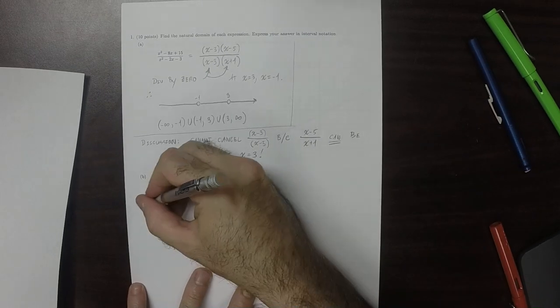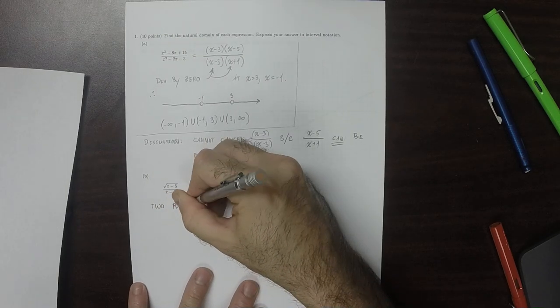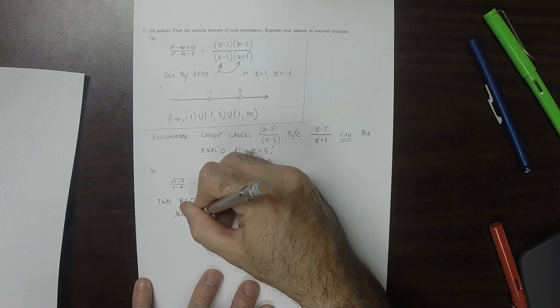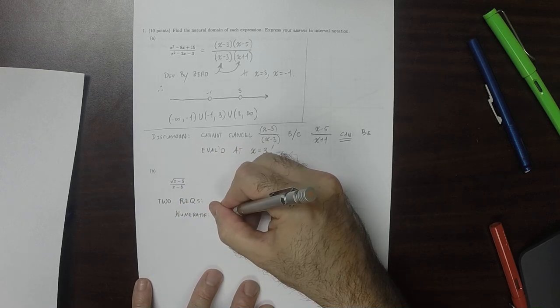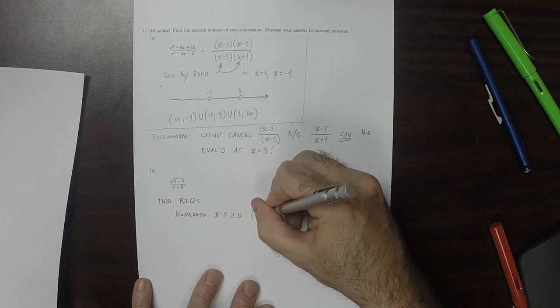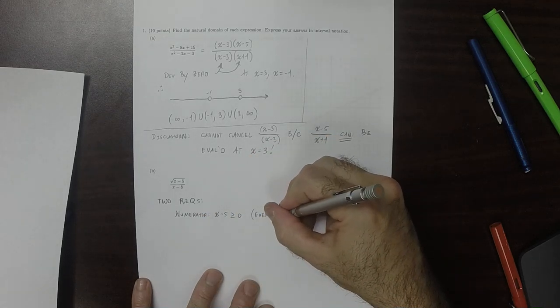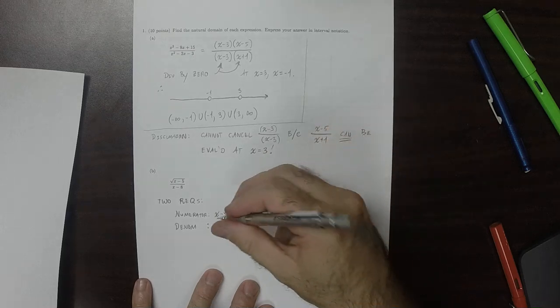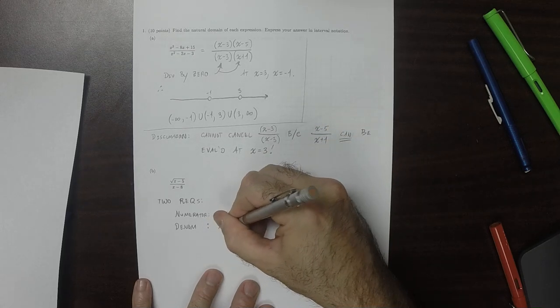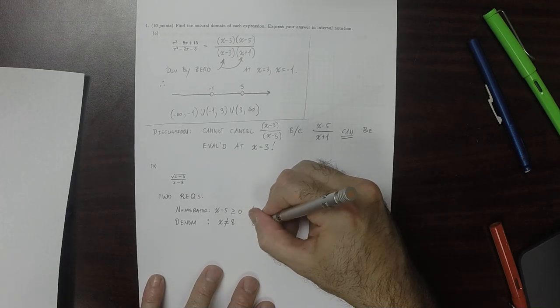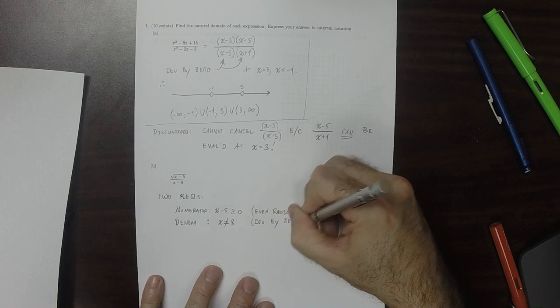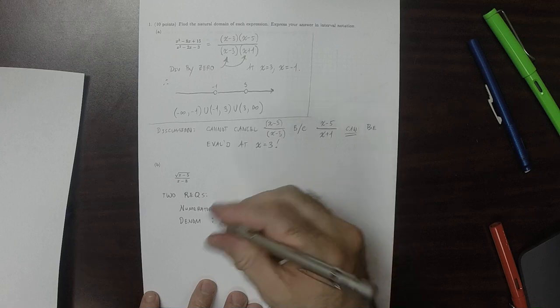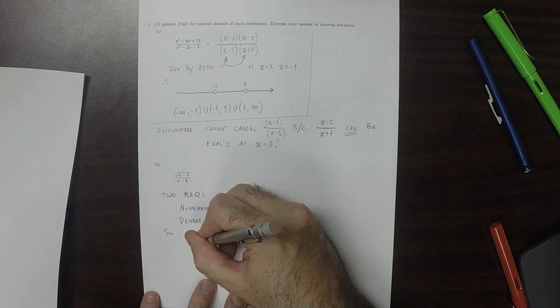For part B, we have two requirements. One requirement from the numerator. From the numerator, we need that x minus 5 is greater than or equal to 0 because that's an even radical. So its argument, its input, needs to be non-negative. And the denominator requirement is that we have to have x not 8 because that would cause a division by 0. So we need both of these things to be true.